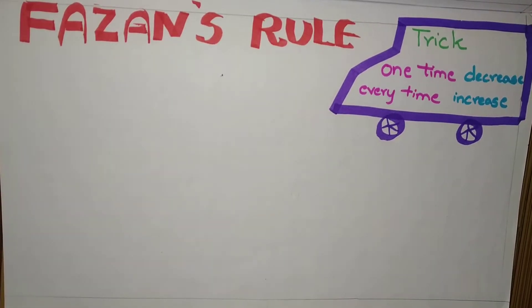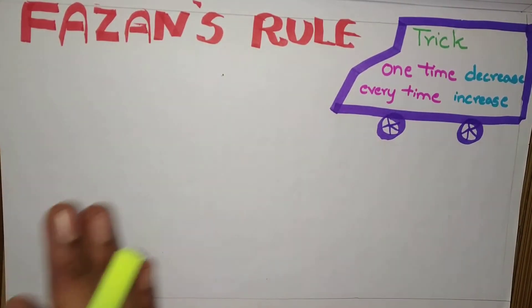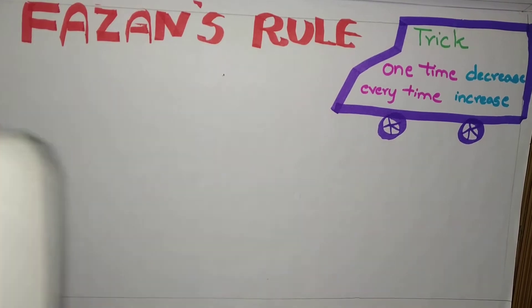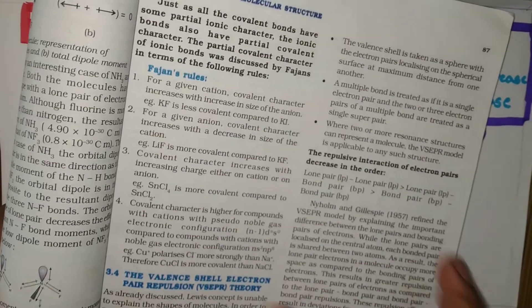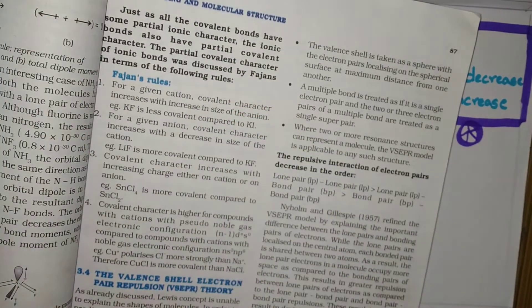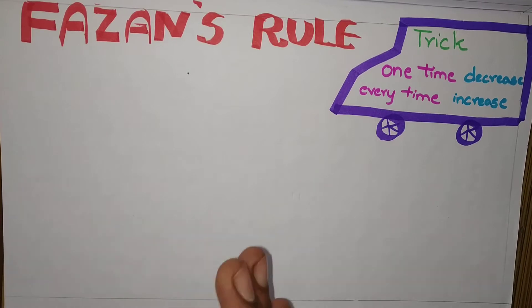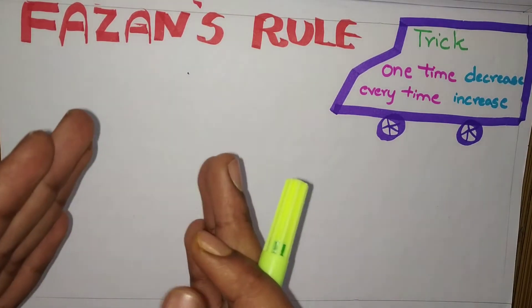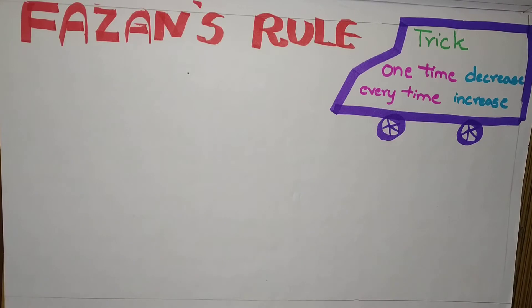Hi students, today we are going to discuss Fazan's rule from chemical bonding. See this textbook, here Fazan's rule is given. Actually when you read this, you feel a little confused when you are giving exams. But here I am doing a small trick so that you can remember this Fazan's rule for a long time.